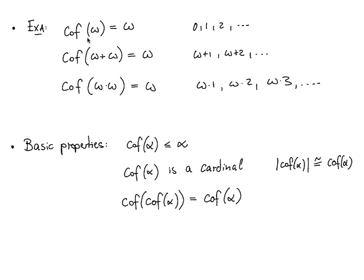Here are a few examples of cofinality. The cofinality of ω is ω — the standard ω-sequence witnesses this, and it cannot be less than ω because a finite sequence cannot be cofinal in ω. The cofinality of ω+ω is ω, witnessed by the sequence ω+1, ω+2, and so on. Similarly, the cofinality of ω·ω is ω, witnessed by ω, ω·2, ω·3, and so on.